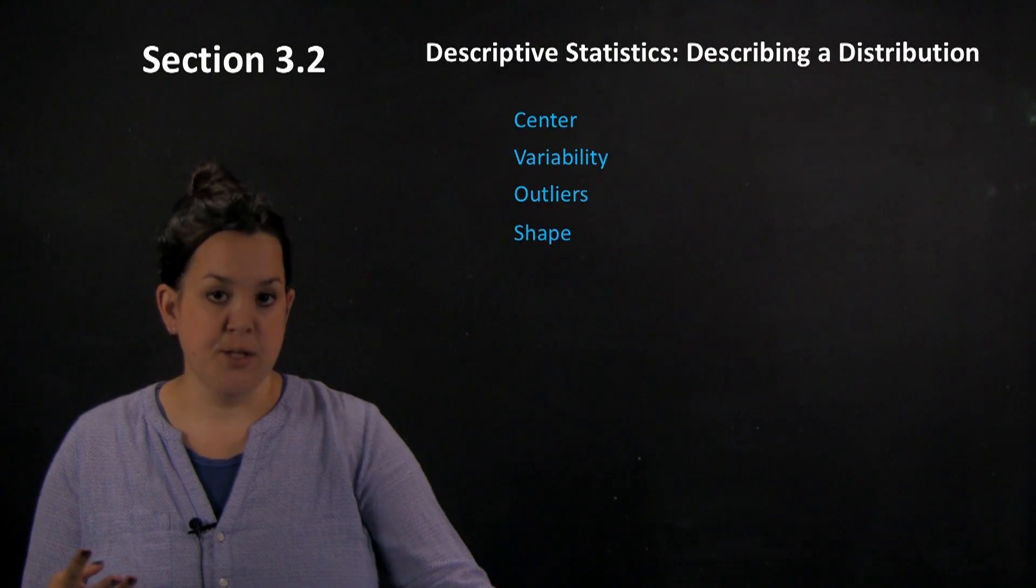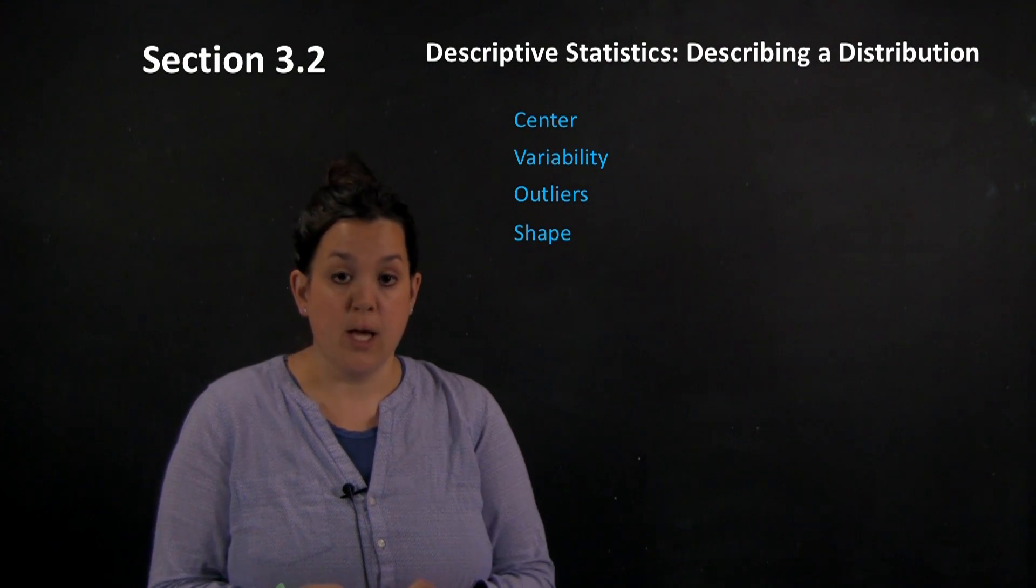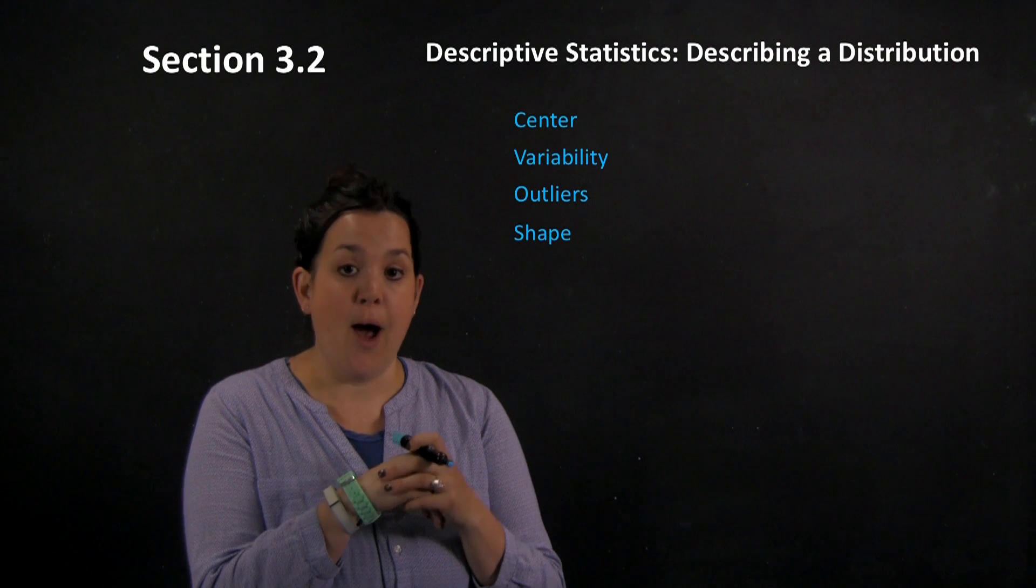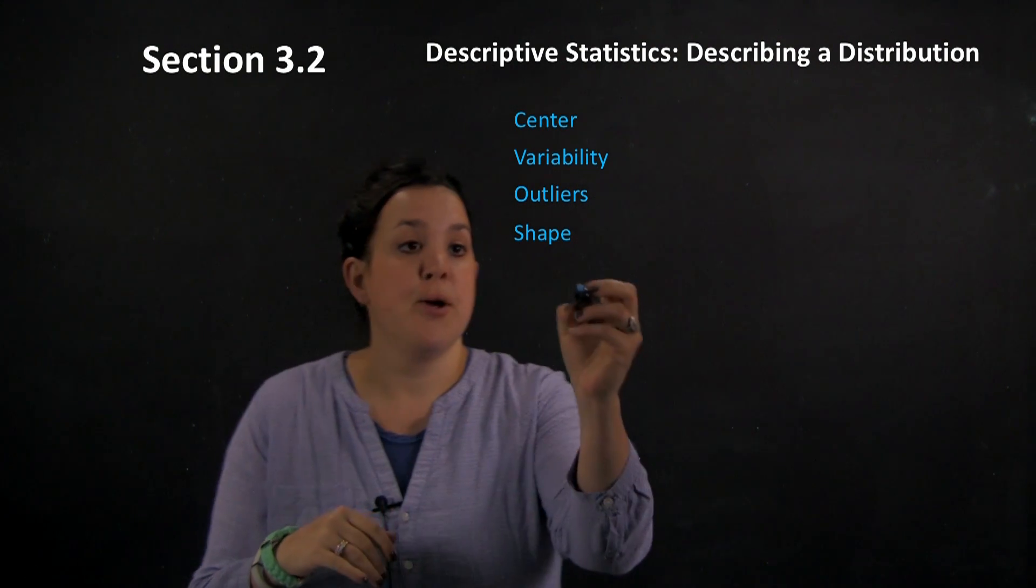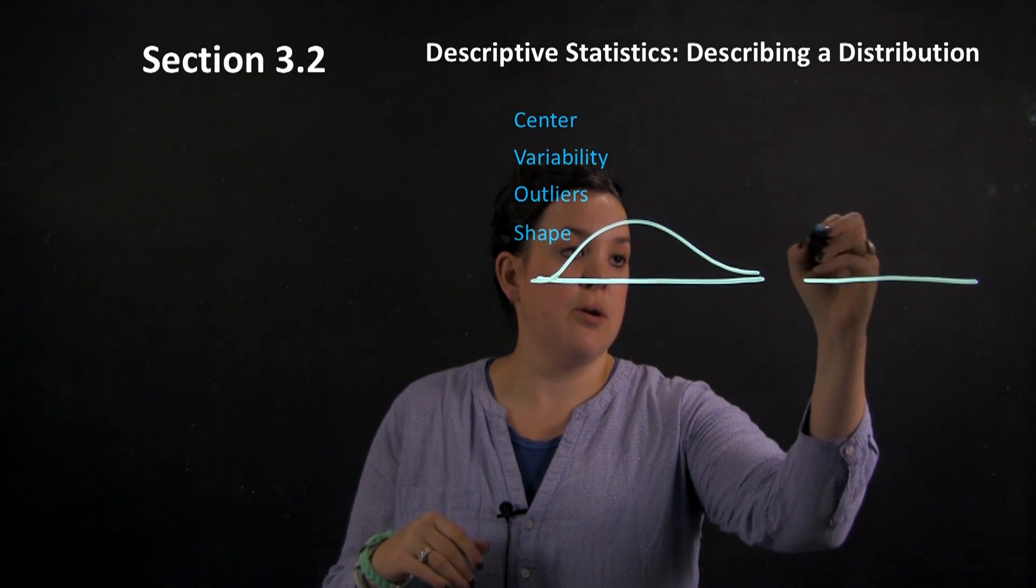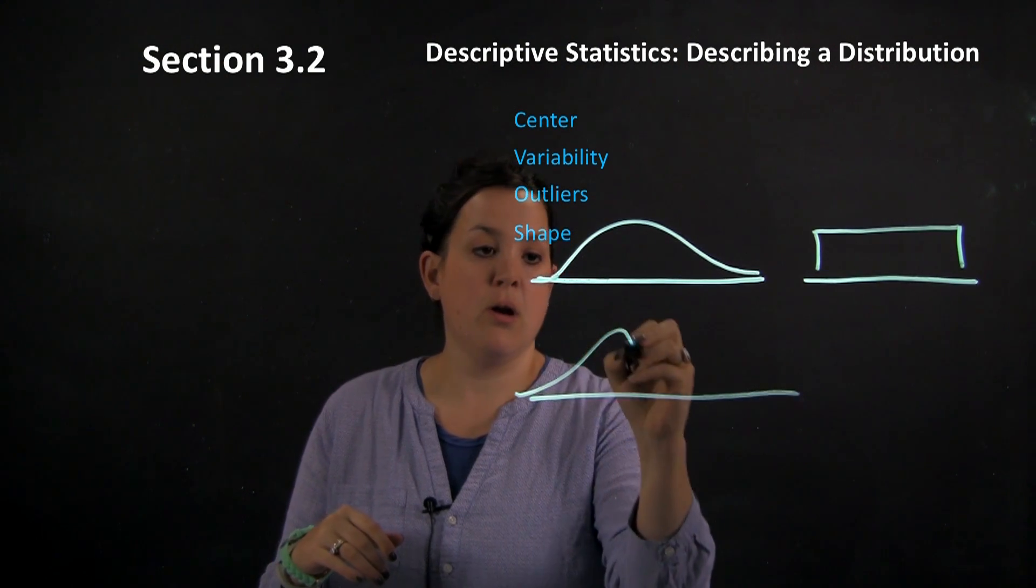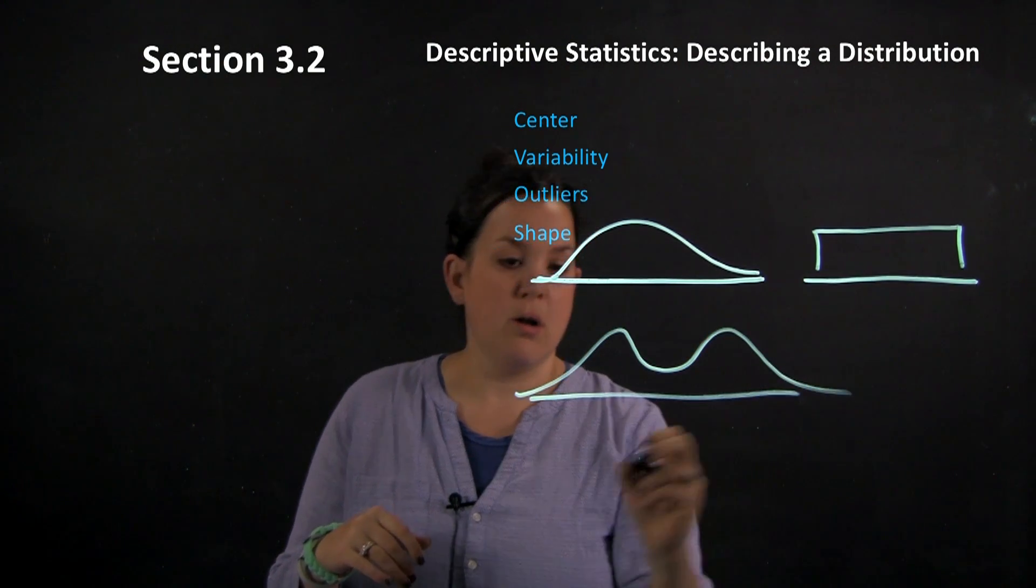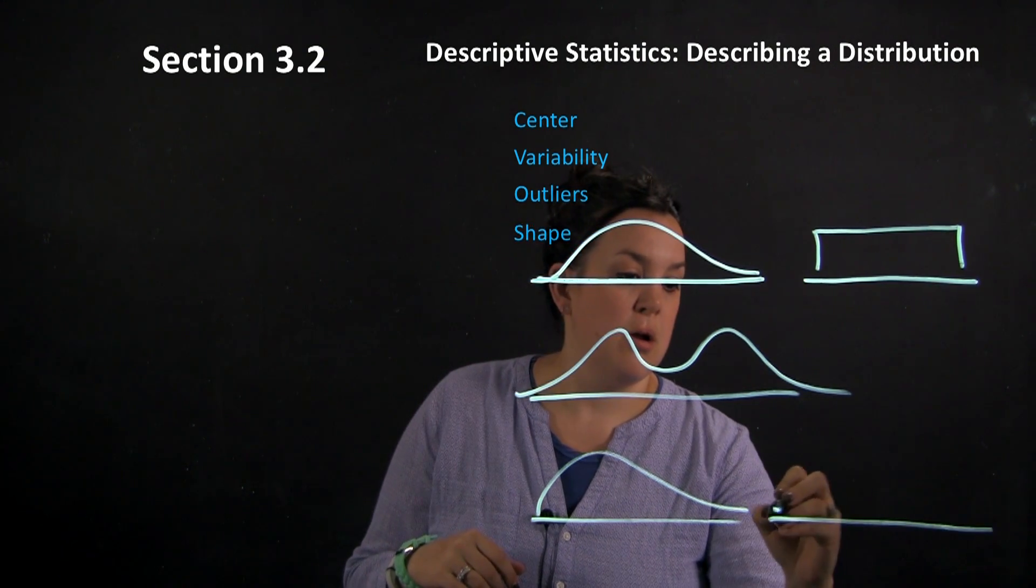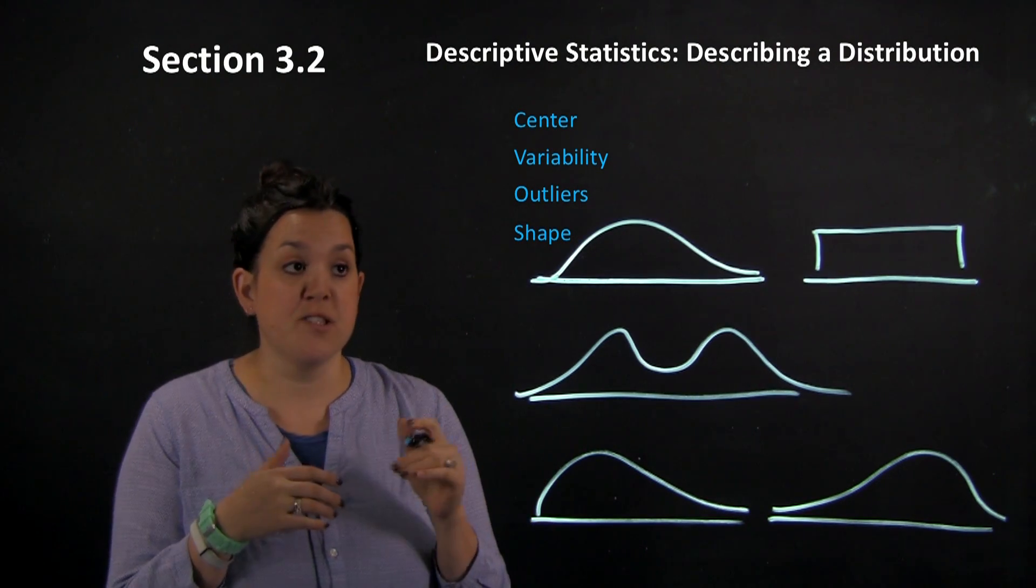So shape is going to help you describe what the actual graph looks like. There are multiple shape descriptors. I'm going to draw a few pictures and then we're going to talk about how you would describe those shapes. So there's one, another, another. Okay, so those are some shapes that we can have for different graphical displays.